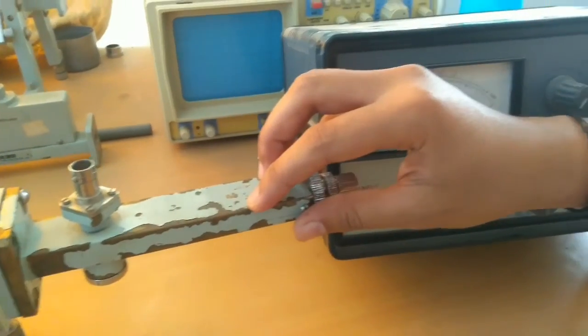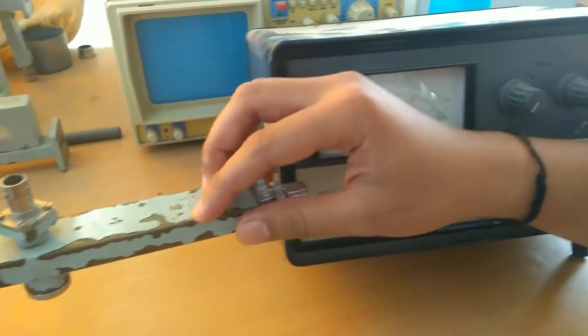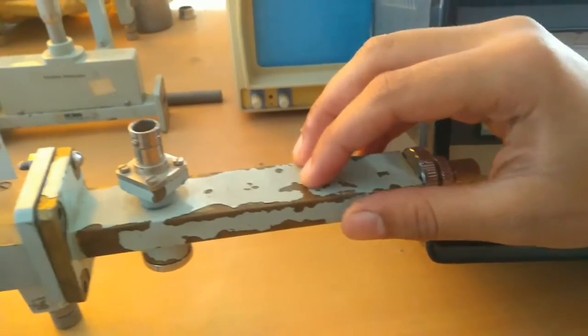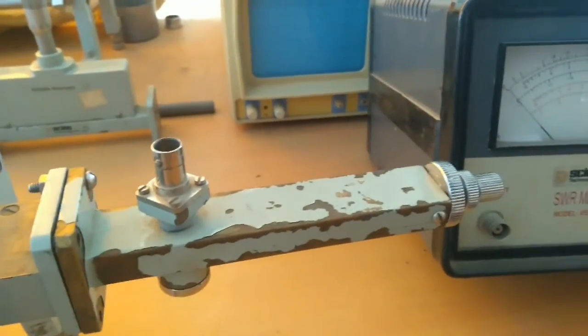It has a frequency range similar to the previous component, 8.2 to 12.4 gigahertz. Now the next component we have is the SWR meter.